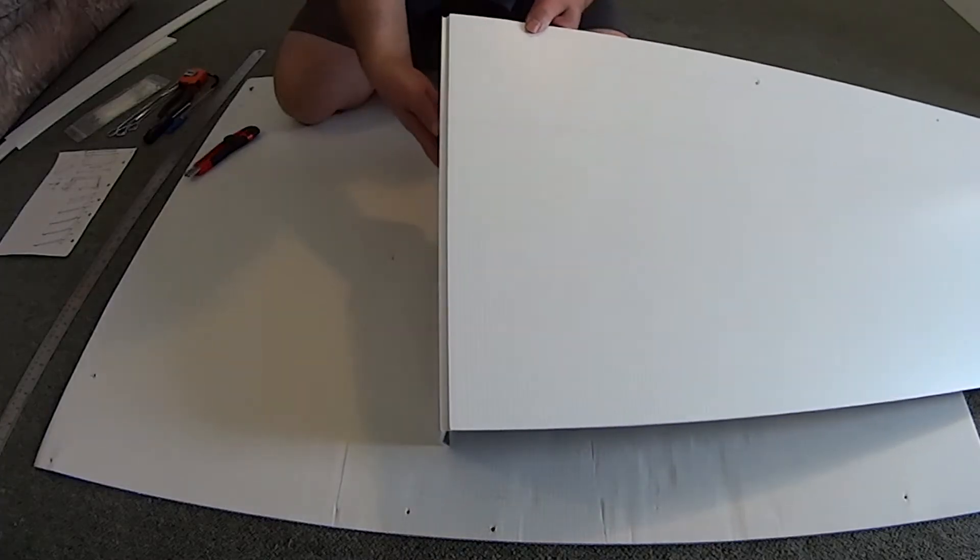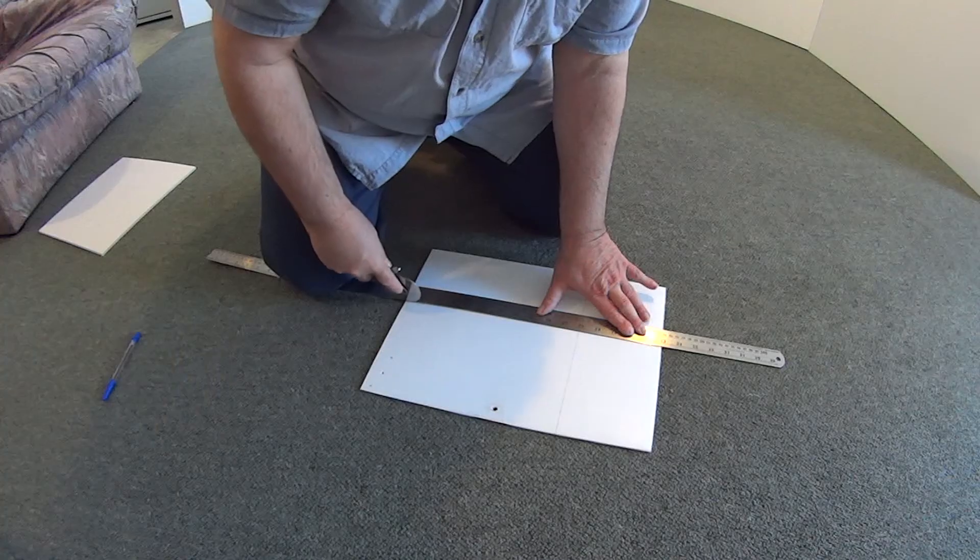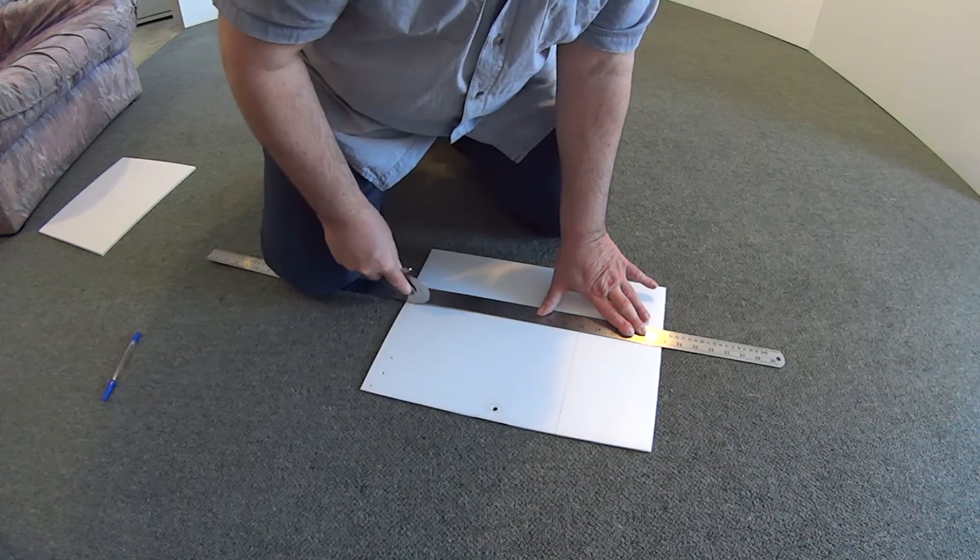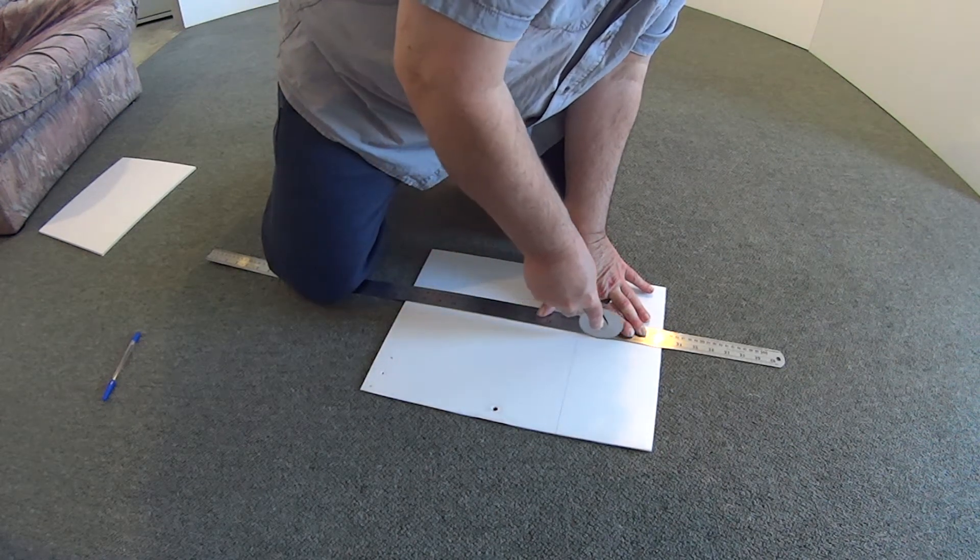Folding will be a part of most corrugated plastic projects. To successfully fold corrugated plastic, it helps a lot to effectively prepare the plastic to be folded. There are a number of ways to do this.